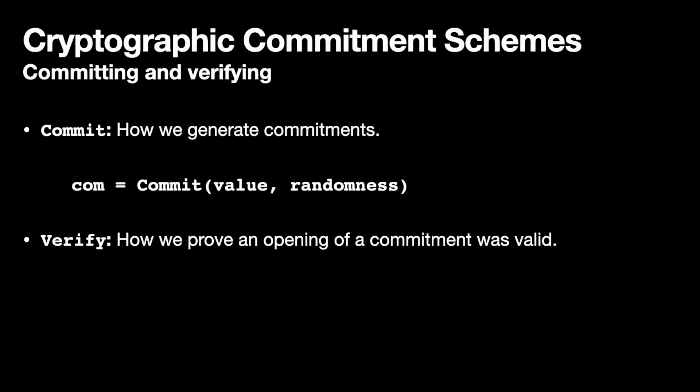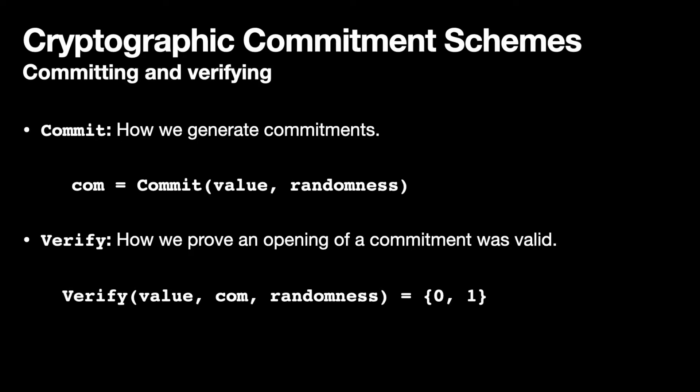For the commit scheme, we're going to have a value com, that is our commitment. And we're going to run our algorithm with inputs: value — our secret value — as well as some randomness. For verify, we're going to take the value, the randomness, and the commitment, and we're going to output a boolean which tells us whether or not we accept or reject that value and randomness as a correct opening of the commitment com.